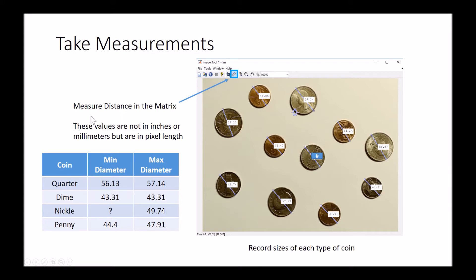The next thing we can do is we can measure distance within the matrix. I've selected the diagonals of all the quarters, all the nickels, and all the dimes, and then I'm able to put those into a table. All my quarters have a minimum diameter of 56 and a maximum diameter 57, it's kind of nice that they're consistent.